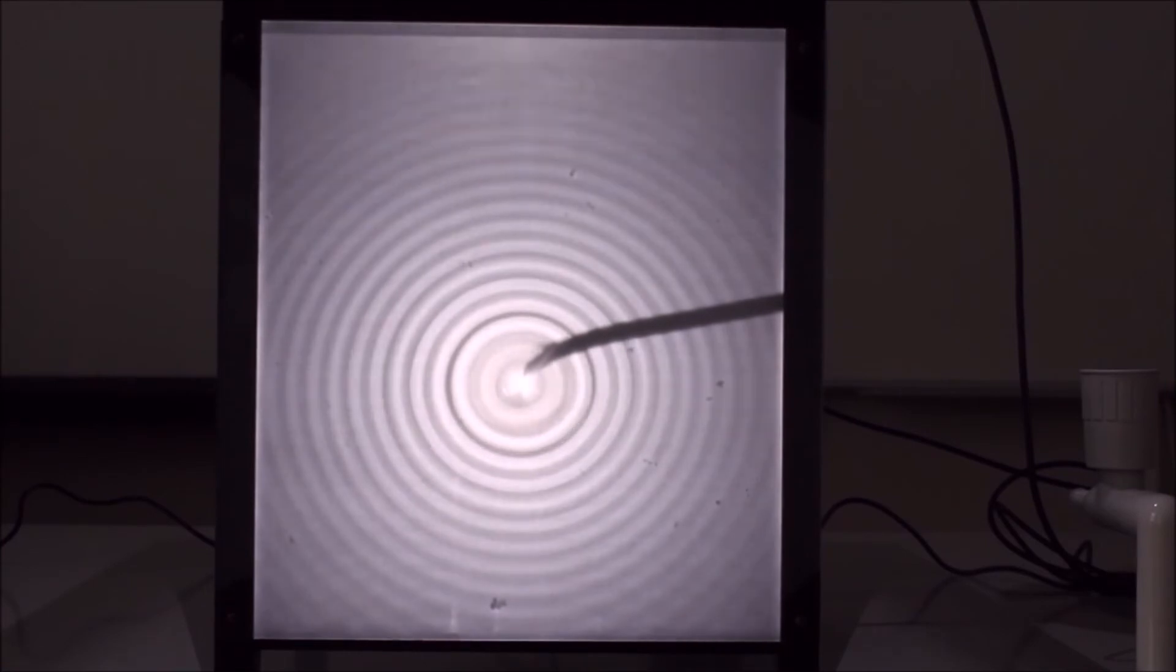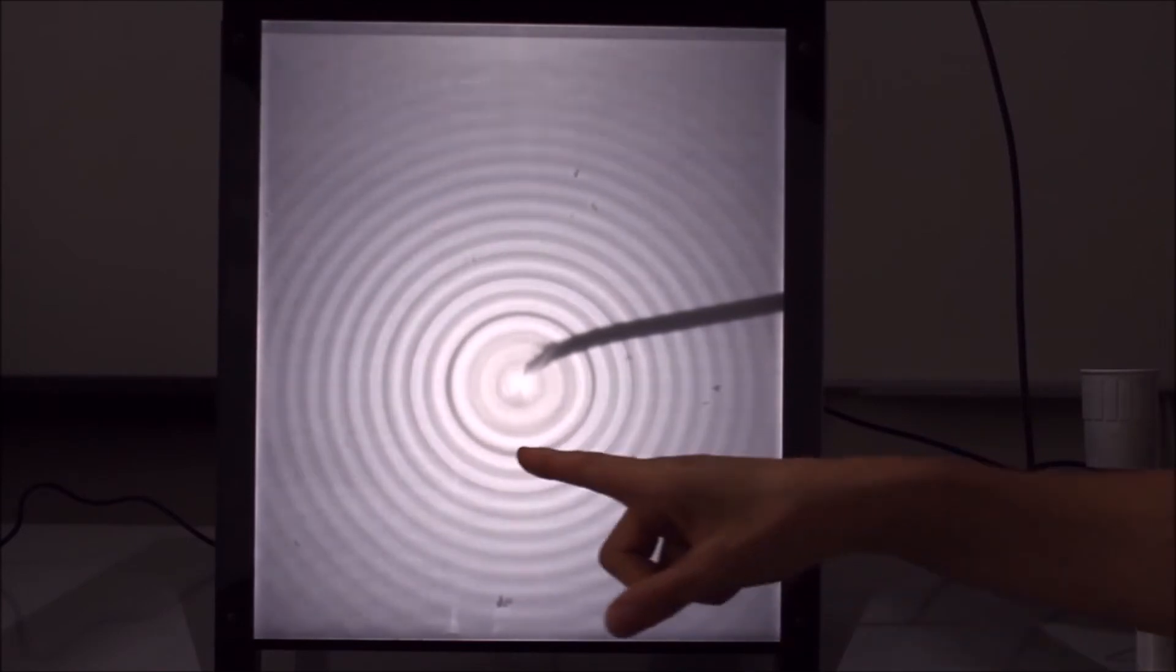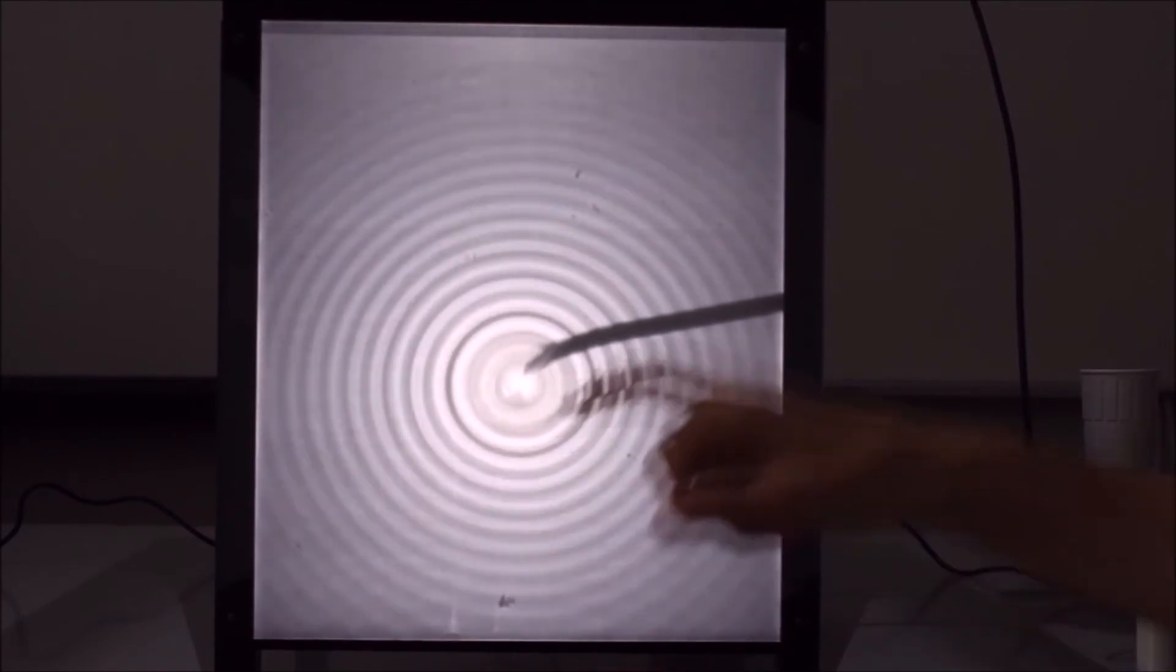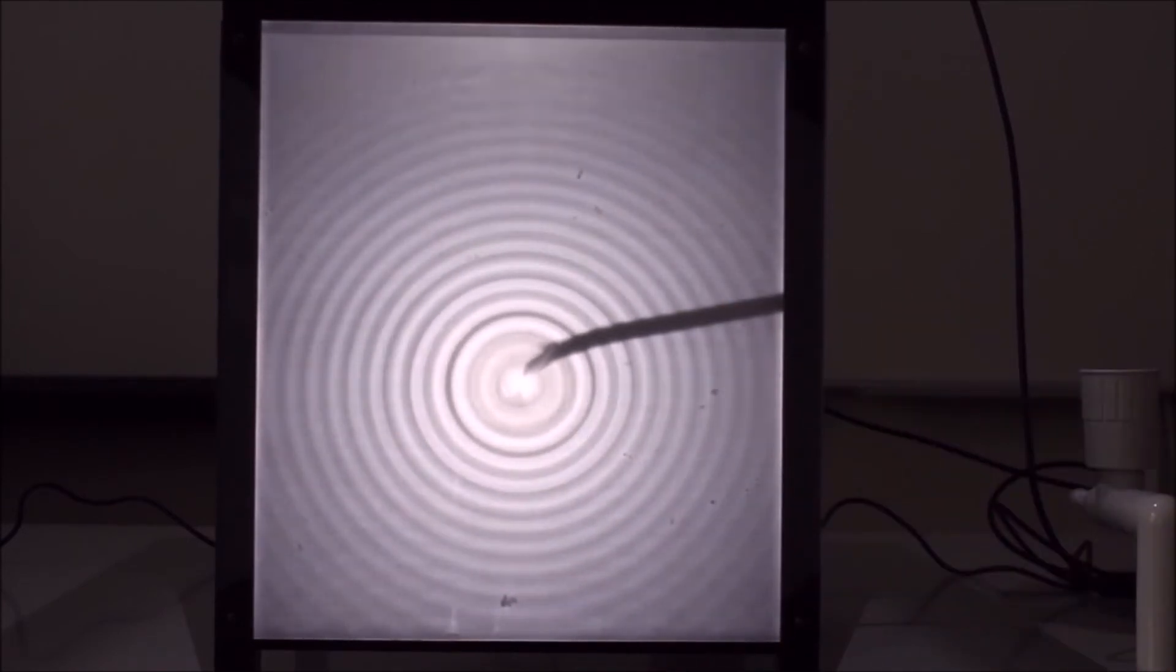Nézzük, mi történik akkor, hogyha mozgatom a rezgéskeltőt. Amit meg kell figyelnünk, az a mozgás közben a hullámfrontok egymáshoz viszonyított távolsága.